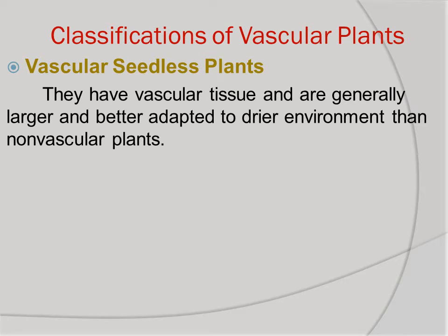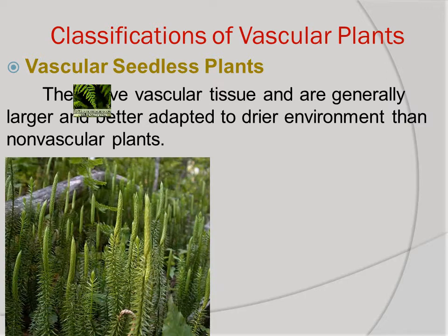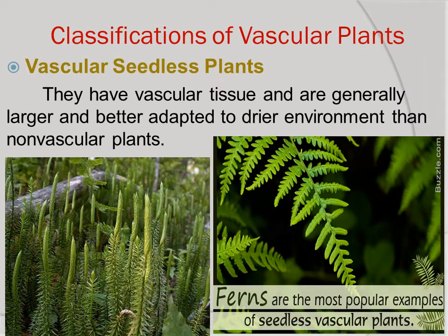Vascular plants are further classified into two: the vascular seed plants and the vascular seedless plants. Vascular seedless plants have vascular tissue and are generally larger and better adapted to drier environments than the non-vascular plants.